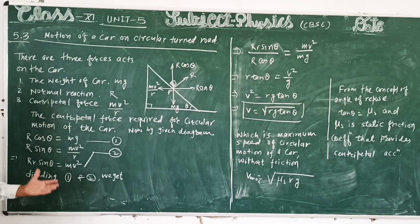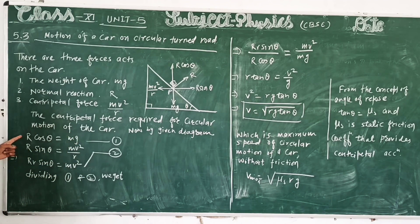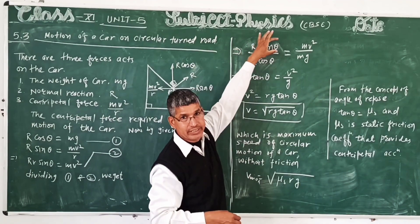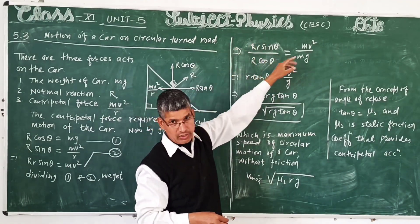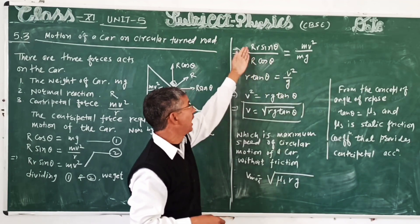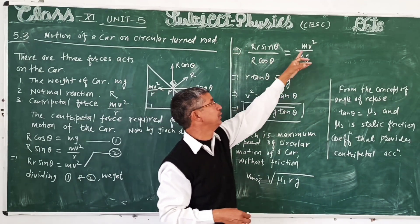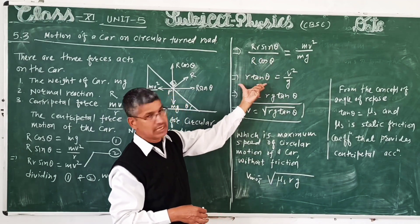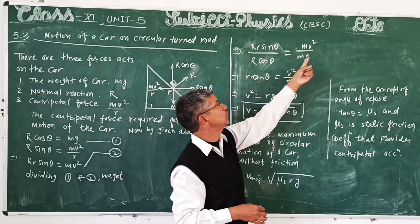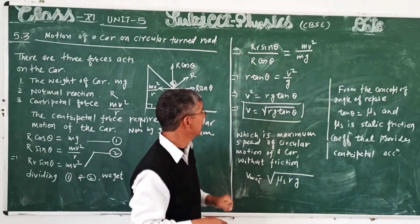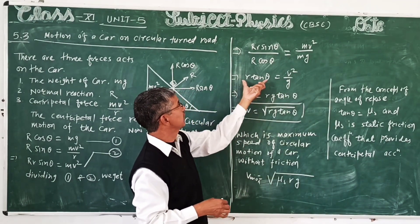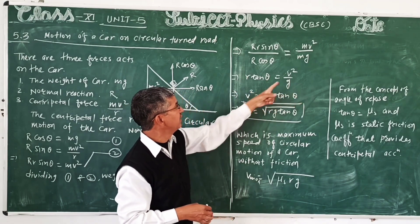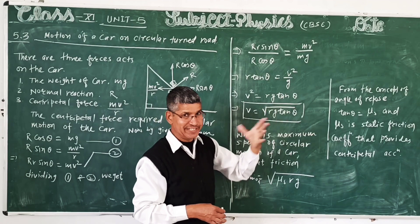This implies R sin theta upon R cos theta equals mv² upon mg. R and m cancel. Then sin upon cos equals tan theta equals v²/rg. We get v² equals rg tan theta.